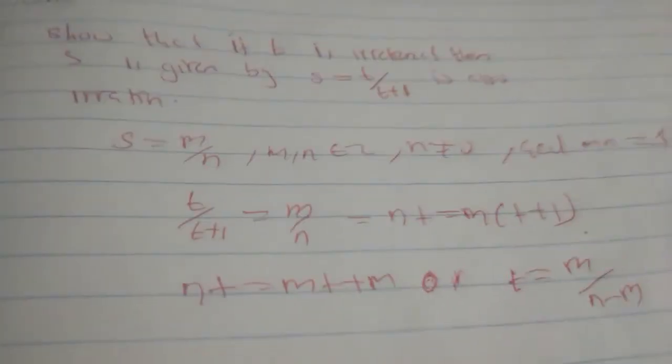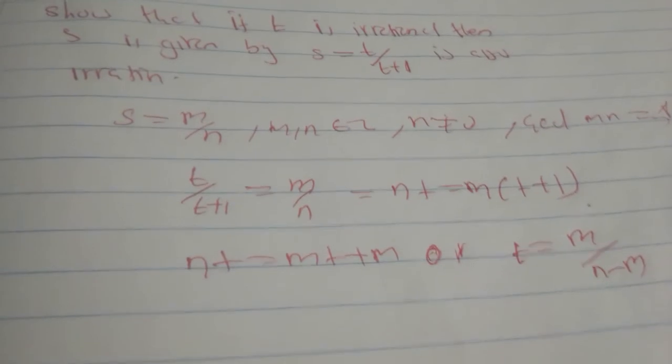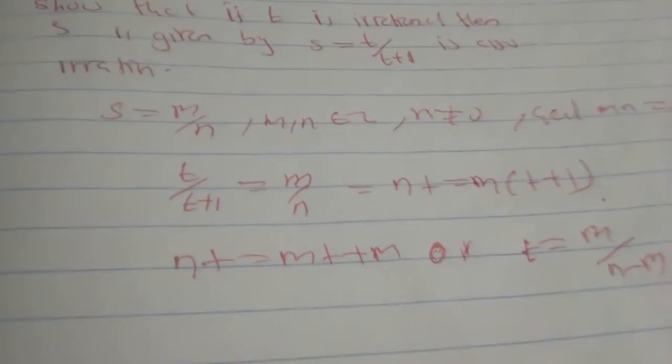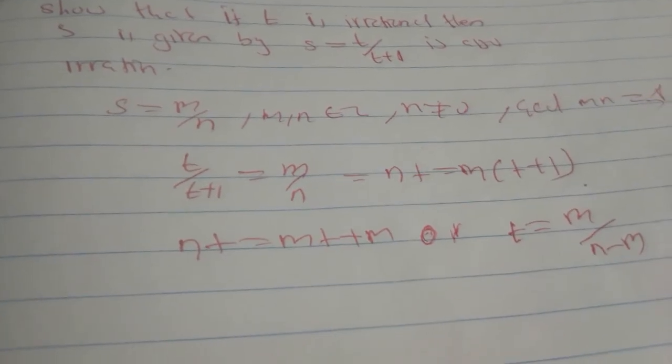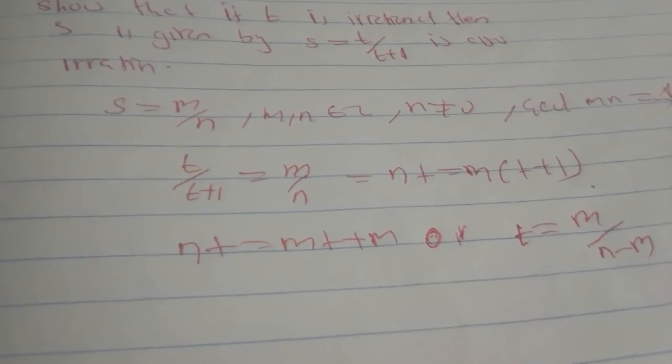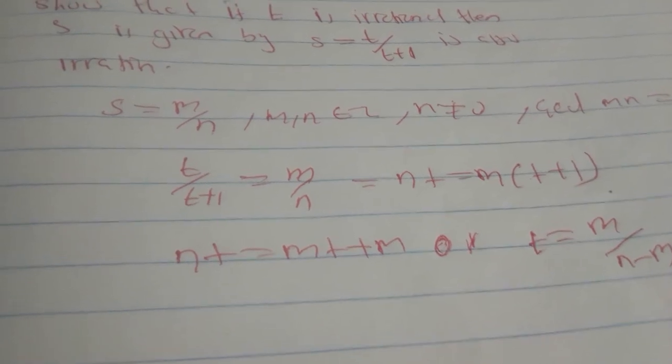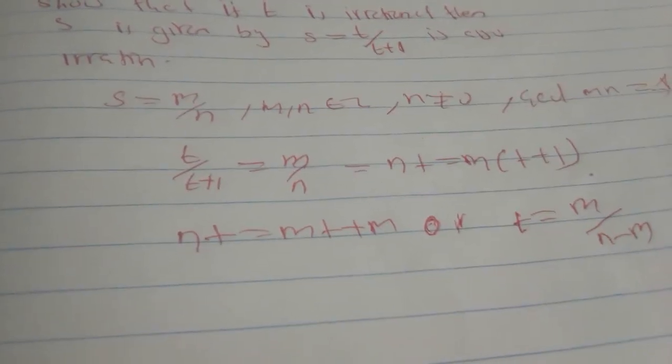Since Q is closed under addition, subtraction, and multiplication, it will follow that m over n minus m is rational. But t is irrational, so we have a contradiction.